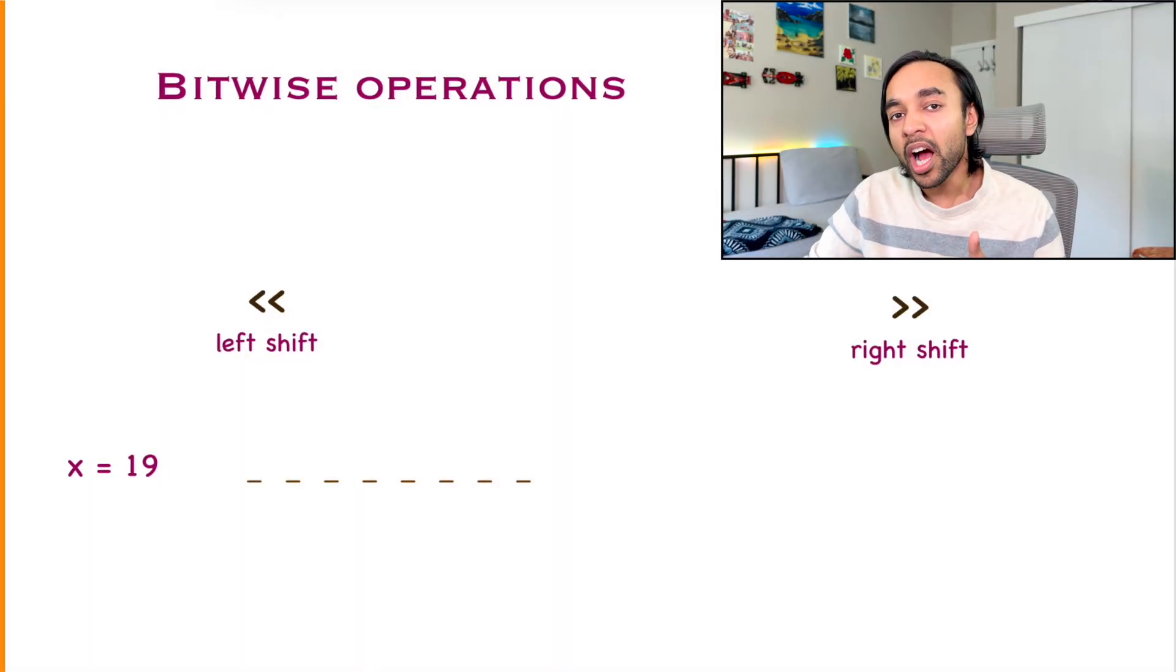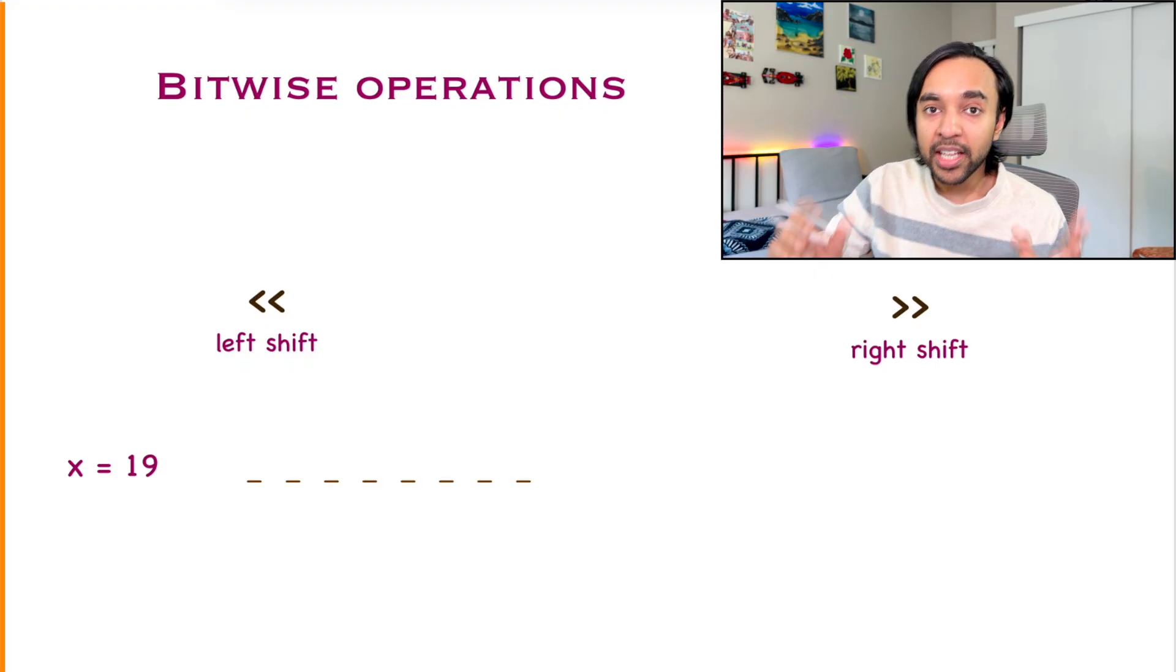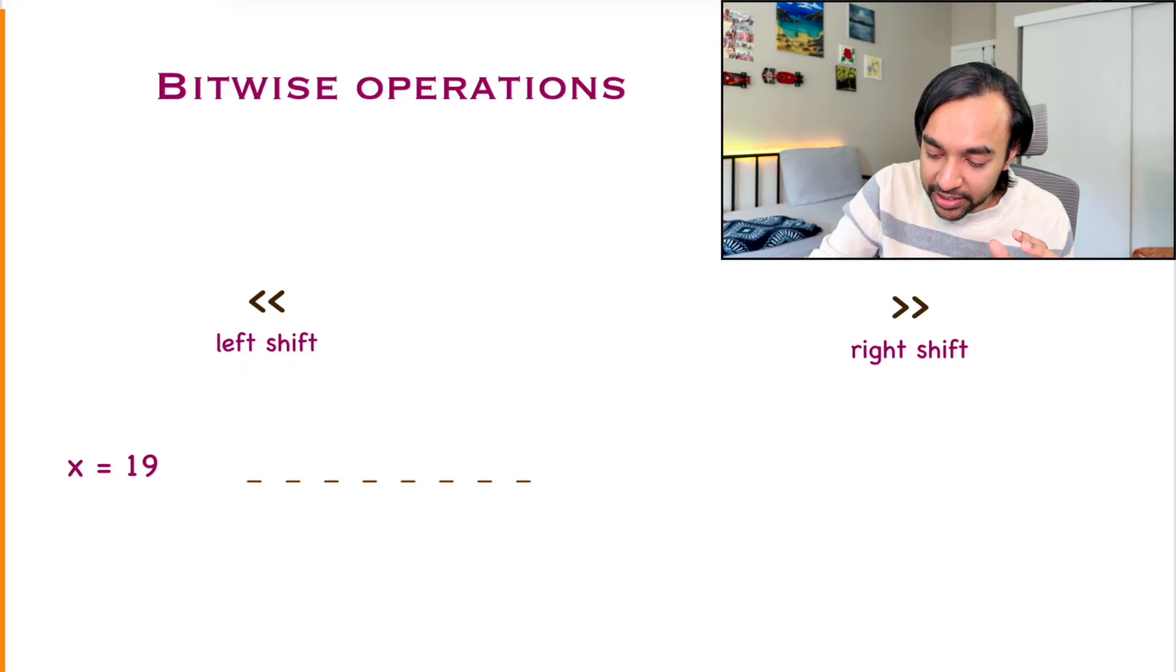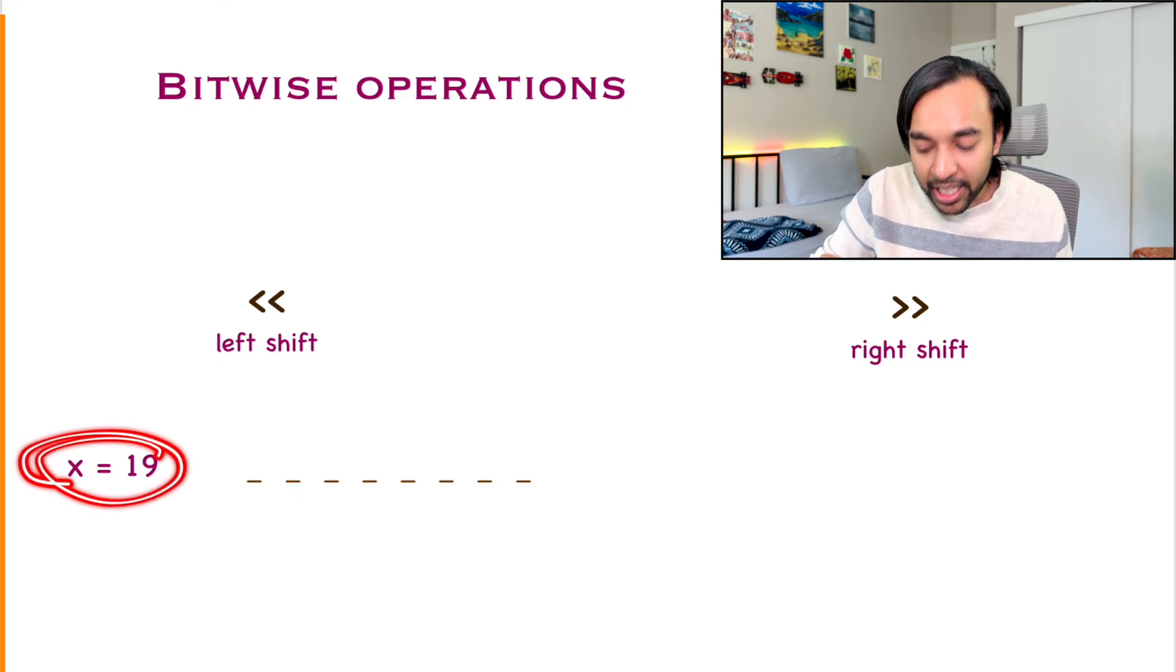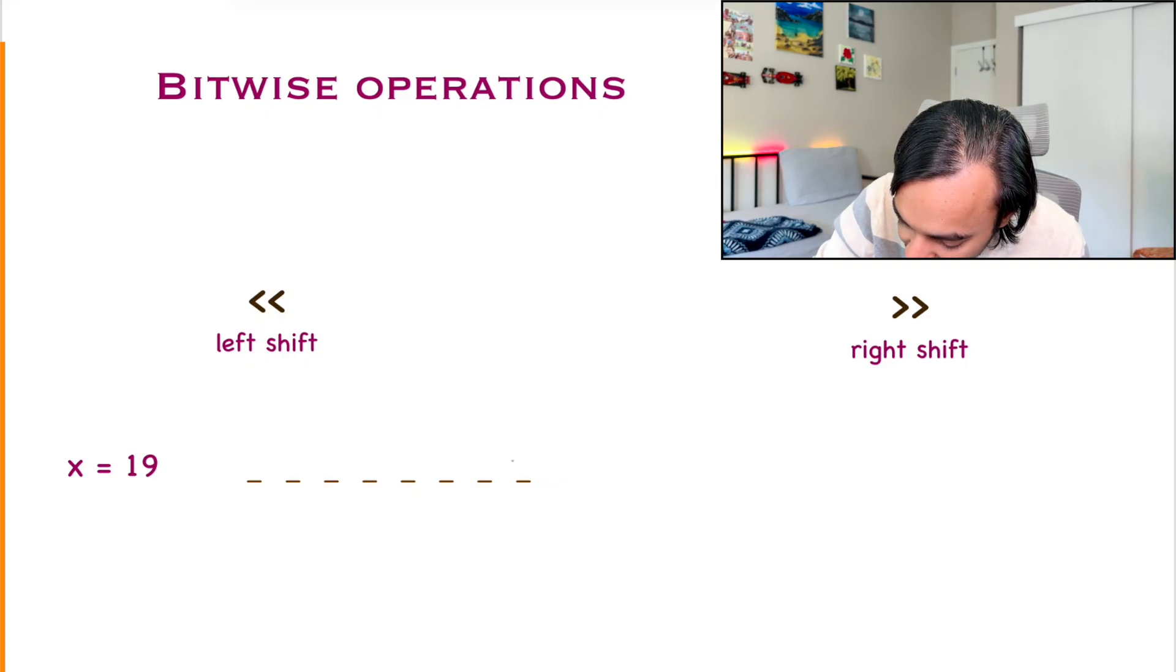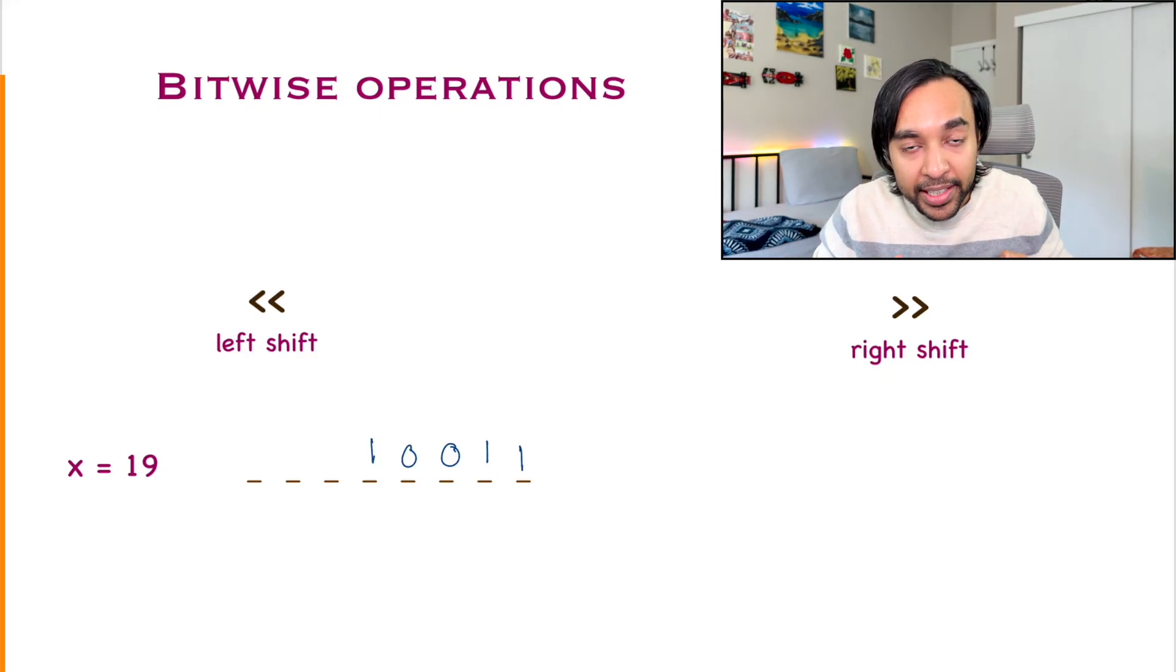Primarily, you have two shift operators available. That is, the left shift and the right shift. Now, how do they work? Let us take up a sample number. Let us take up the number 19. And, how do you represent 19 when it comes to bits? I can write down 19 as 1, 0, 0, 1, 1, 0, 0. This is how I represent the number 19.